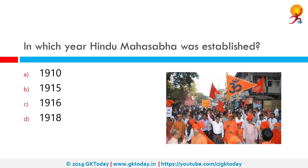In which year was the Hindu Mahasabha established? The correct answer is 1915. Hindu Mahasabha was founded in 1915 by Madan Mohan Malaviya. It worked with Arya Samaj and other Hindu organizations and was directly linked with the Rashtriya Swayamsevak Sangh, founded in 1925 at Nagpur by K.B. Hedgewar. The first All India Hindu Mahasabha conference was organized at Haridwar in 1915.